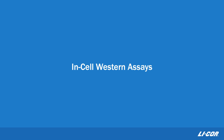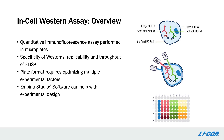The next experiment I would like to discuss is the in-cell western assay. The in-cell western assay is a plate-based quantitative immunofluorescence assay. In this experiment, cultured cells are treated with an experimental treatment of interest, then fixed and permeabilized. Once the cells have been permeabilized, they can be incubated with target-specific antibodies and fluorescently labeled secondary antibodies for fluorescent target detection. Using immunofluorescence to detect targets of interest provides specificity similar to what we see in western blots, while the plate-based format lends increased throughput and repeatability, similar to an ELISA assay.